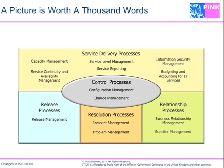Let's take a look at ISO 20000 Part 1 and some of those changes, starting with where the standard came from. For those familiar with 20000, you'll recognize this graphic, detailed in both Parts 1 and 2. It reflects the 13 processes pertinent to 20000, but what it's missing are the three management practices also critical to the overall assessment process — planning and implementing service management, planning and implementing new or changed services, and the requirements for the management system.